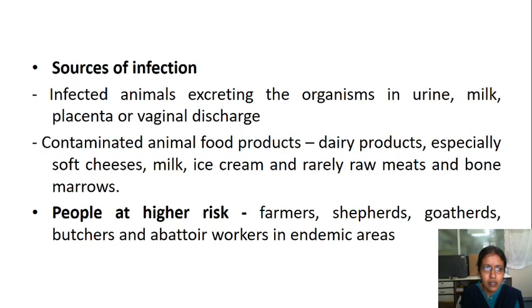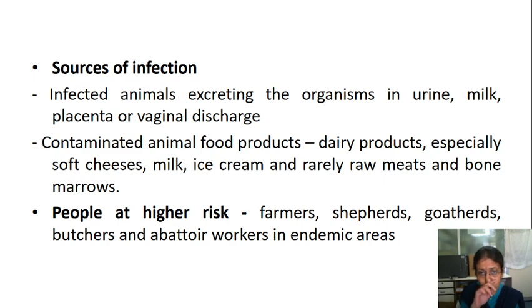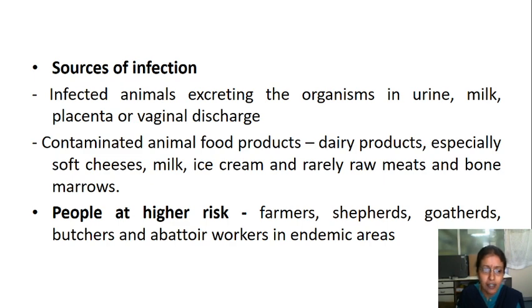Sources of infection include infected animals excreting organisms in urine, milk, placenta, or vaginal discharge, and contaminated animal food products — mostly dairy products, especially cheese, milk, ice cream, or rarely raw meats and bone marrow. People at higher risk include those who work with cattle as farmers, shepherds, abattoir workers, or butchers, particularly in endemic areas.